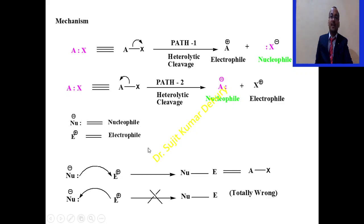So here you can see the lone pair of electrons on nucleophile will attack the electrophile E plus, giving rise to nucleophile-electrophile bond. Or here you can see A minus nucleophile and X plus electrophile, so you get A-X bond. Here I have shown E plus cannot attack nucleophile. This process does not occur. This is wrong.